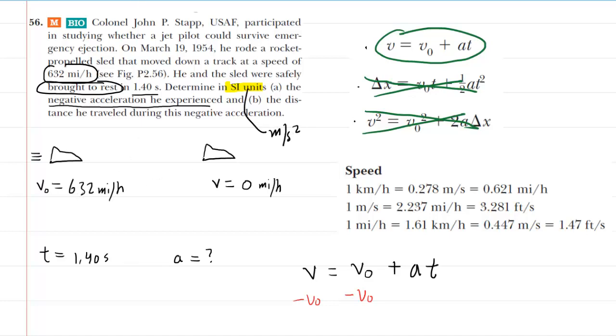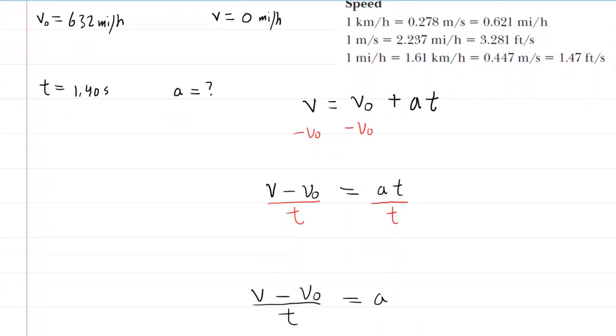So we're going to actually want to just start by taking that 632 miles per hour and converting it into meters per second. Maybe we'll come over here and do that. So we'll list it one more time, 632 miles per hour.